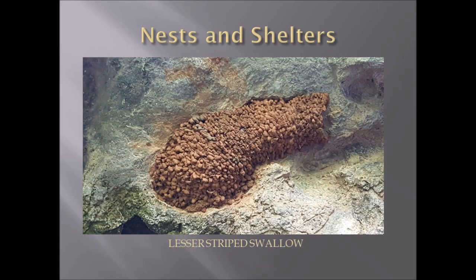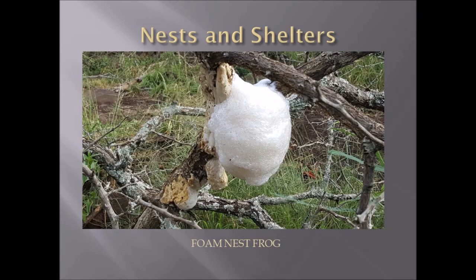Here we have the mud nest of a lesser striped swallow, where it has taken little globules of mud or clay and formed a long nest with a long entrance at the bottom of an overhang. Here is a foam nest of a foam nest tree frog — it lays its eggs and as it is laying them and the males are mating, they whip up a bubbly substance which forms a nest around the eggs, protecting them from desiccation and from predators. When the tadpoles hatch they will drop down into the water over which the nest has been created.